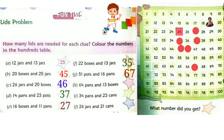Now question H: 64 pans and 13 boxes. 64 plus 13. In the 1's place: 4 and 3, 4 plus 3 is 7. And in the 10's place: 6 plus 1 is 7. So the answer is 77. Colour 77 in the 100's table.